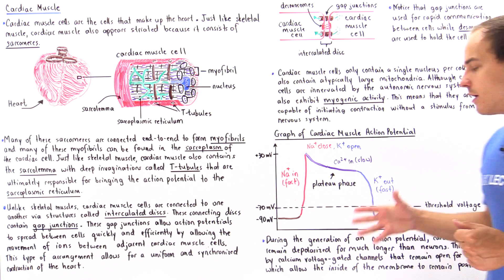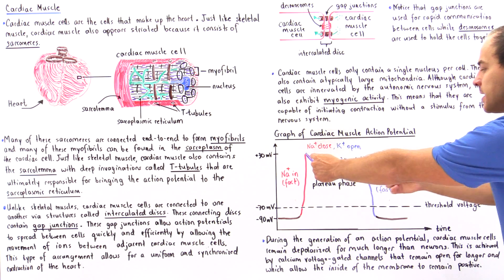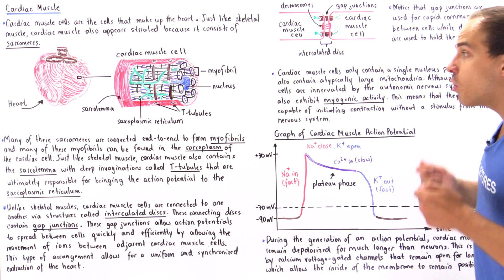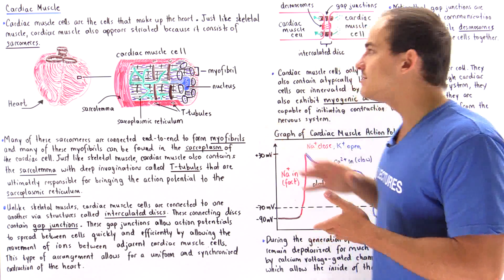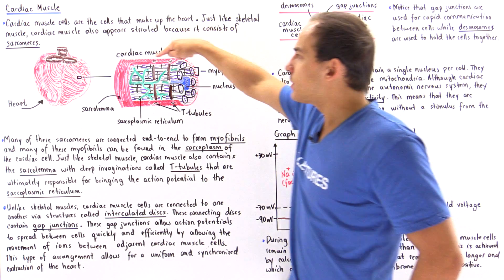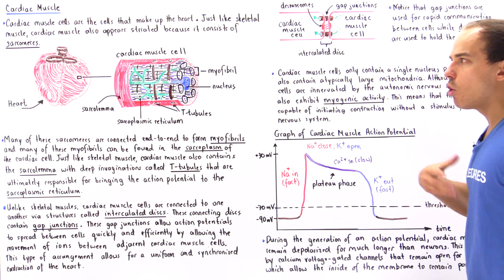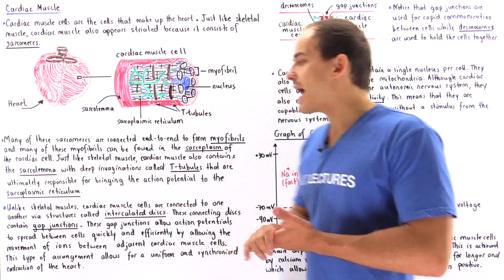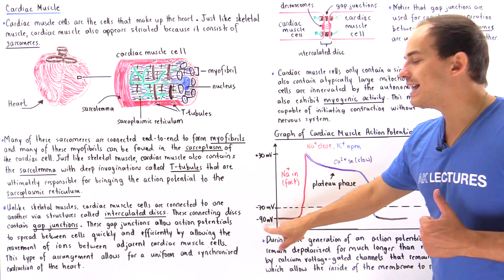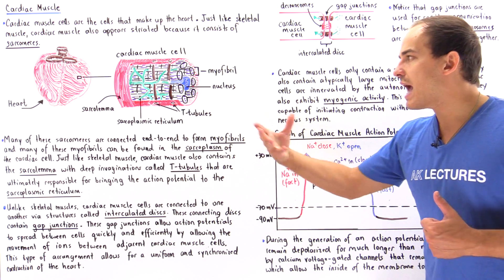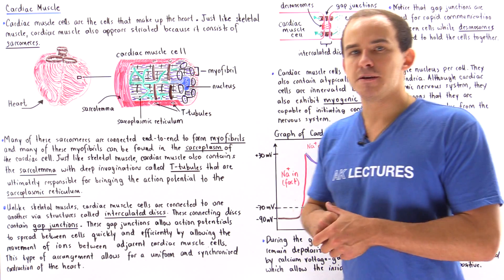During the generation of an action potential inside a cardiac muscle cell, there is an extended period of depolarization caused by voltage-gated calcium channels in the membrane. The membrane contains not only sodium and potassium voltage-gated channels, but also calcium voltage-gated channels. The resting potential is about negative 90 millivolts, and a stimulus reaching the threshold voltage of about negative 70 millivolts triggers the response.